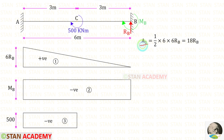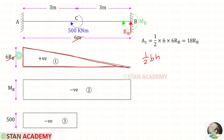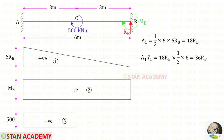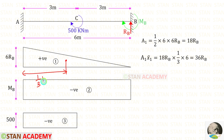Now let us find Area 1. It is a triangle, and we know the area formula of a triangle. Here the breadth is 6 and height is 6RB. Applying these values, for Area 1 we will get 18RB. Now let us find Area 1 times x̄1. For this triangle, the centroid distance towards the left is (1/3) × breadth. The breadth is 6, so (1/3) × 6 = 2. For Area 1 × x̄1, we will get 36RB.